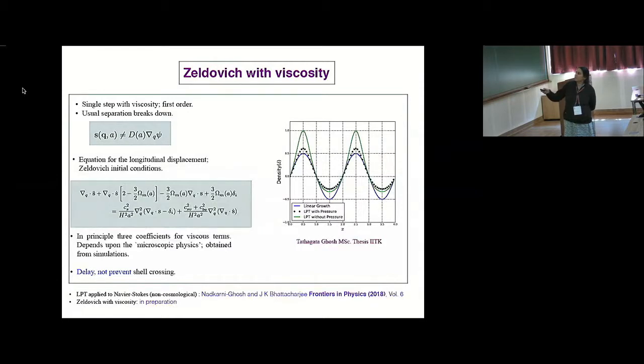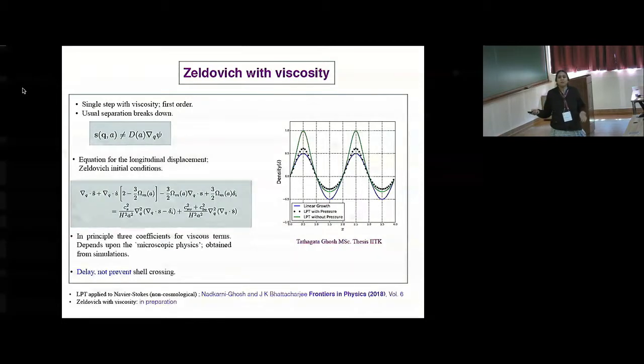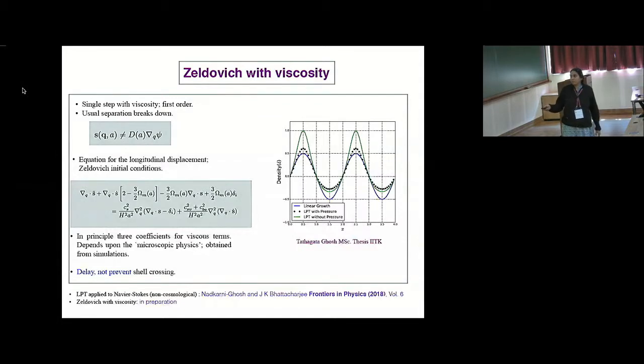But this is one of the master's thesis students in IIT Kanpur just tried out this stuff. So here is the case where you put—this is linear growth without—just a linear growth. So this is LPT with pressure and LPT without pressure. So you can see that for a single sine mode, you can get the high density to be lower. So I should say that this scheme does not prevent shell crossing, it could only delay it. It is still within the Zeldovich framework, so it won't prevent shell crossing. And some of these calculations were kind of done in a non-cosmological context, applied to the Navier-Stokes in a recent paper.